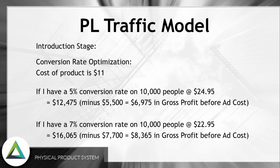Here's a scenario to take into account. If the cost of the product is $11 — say it's a t-shirt — and I have a 5% conversion rate on 10,000 people at $24.95, my revenue will be $12,475. Minus the product cost, that's $6,975 in gross profit before ad cost or any other costs. But if I drop the price to $22.95, I might be able to boost my conversion rate to 7% on the same amount of traffic. I'd get $16,065 in revenue, minus $7,700 in product cost, giving me $8,365 in gross profit before ad cost.